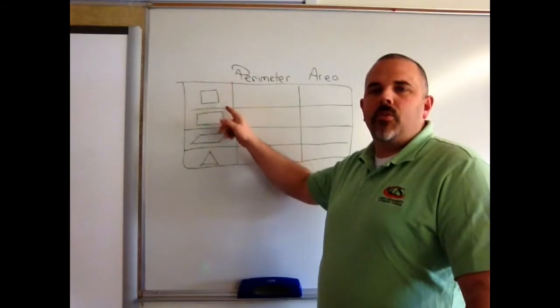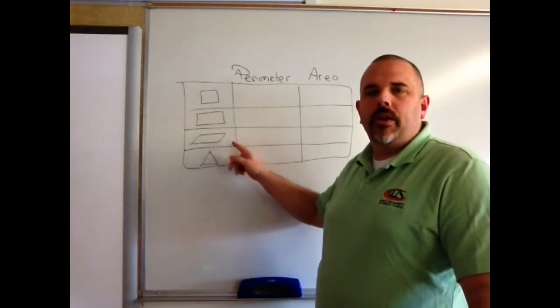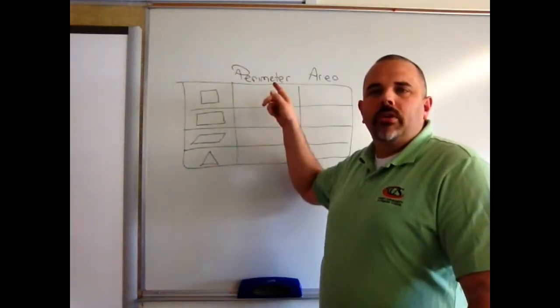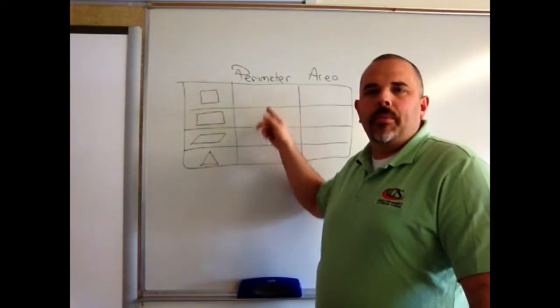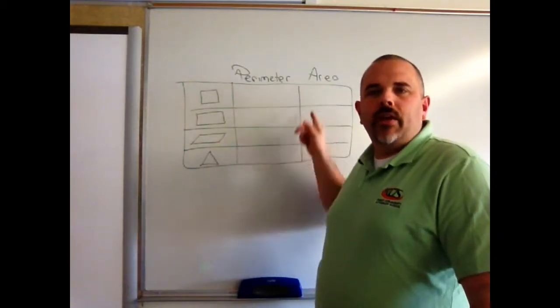I have four shapes here. I have a square, I have a rectangle, a parallelogram, and a triangle. We're going to write down the formulas for the perimeter of each of these and then for the area of each of these.